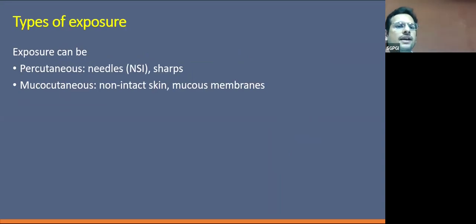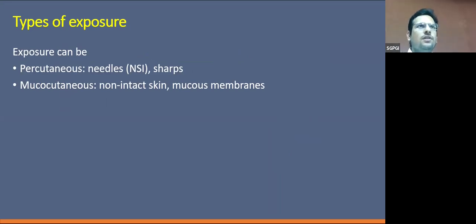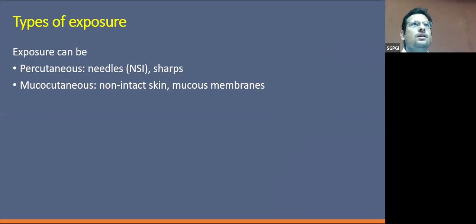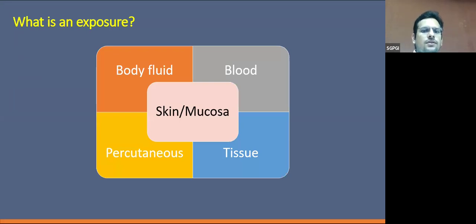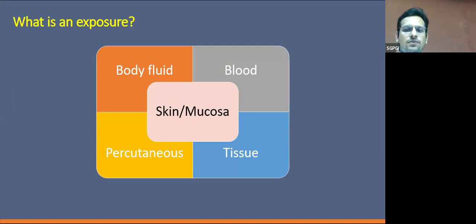Exposure can be either percutaneous — that is, by needles or sharp instruments — or it can be mucocutaneous exposure, involving non-intact skin and mucous membranes. Exposure can also occur due to body fluid exposure, blood exposure, or secondary to percutaneous puncture or tissue exposure that is positive for hepatitis B.